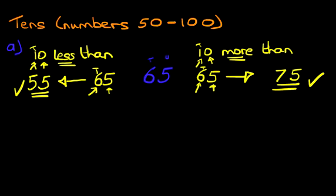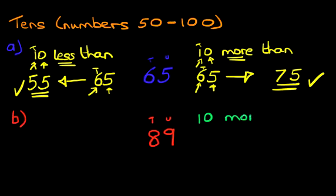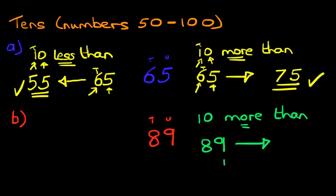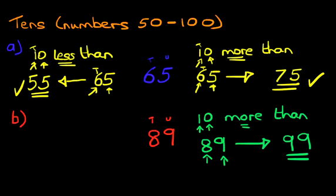That was quite easy, wasn't it? But just to reinforce it, we're going to go through a second example. Now let's suppose we have this number: 89. We've got 89, with 9 as units and 8 as tens. On the right-hand side, we've got 10 more than. So what is 10 more than 89? Well, first let's write the number down: 89. We're doing more than, therefore we are counting forwards. The number 9 is going forward by 0 — they're both units, so the 9 remains as it is. How about the tens? We've got 8 and we've got 1. So 8 is going forward by 1. 8 going forward by 1 is 9. That is our answer: 10 more than 89 is 99.